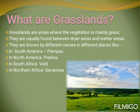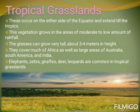Tropical grasslands occur on either side of the equator and extend till the tropics. These vegetations grow in areas of moderate to low amount of rainfall. The grasses can grow very tall, about 3 to 4 meters in height. They cover much of Africa as well as large areas of Australia, South America, and India. Elephants, giraffe, zebra, deer, and leopards are common in tropical grasslands.